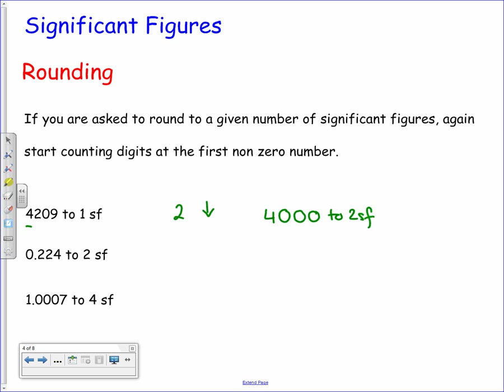For the next number, 0.224, we want this to two significant figures. Again we start counting at the first non-zero digit, which is the two. Counting two digits from there, we get a number followed by a four, and the four tells us we need to round down — so it just drops off the end and leaves us with 0.22.